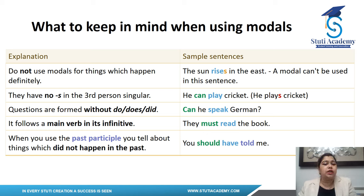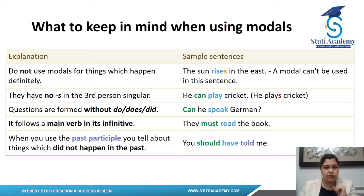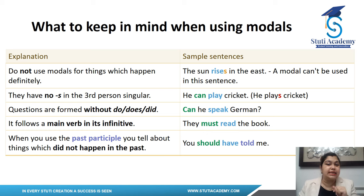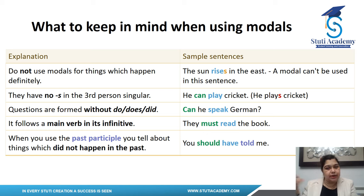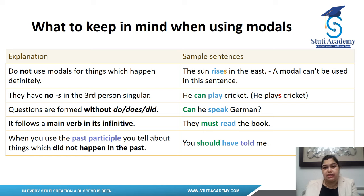Questions with modal verbs are formed without 'do', 'does', or 'did'. For example: 'Can he speak German?' — I'm questioning his ability without using 'does'. Modal verbs follow a main verb in its infinitive form — for example, 'They must read the book.' Reading is an activity happening now and we don't know when it will end.